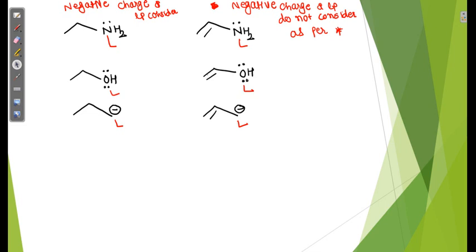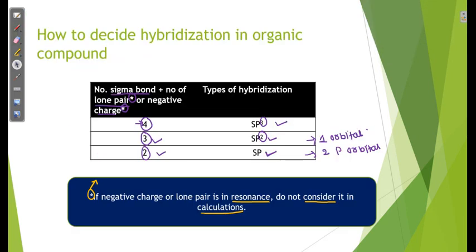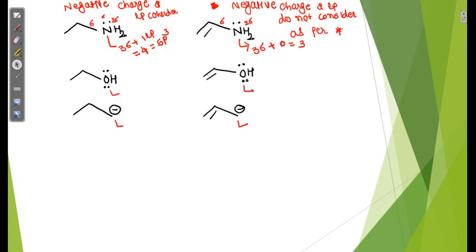For an NH2 group not in resonance: two sigma bonds from hydrogen plus one sigma bond plus one lone pair equals 4, so hybridization is sp3. For an NH2 group where the lone pair is in resonance (starred), we do not consider the lone pair: three sigma bonds with zero lone pairs gives a sum of 3, so hybridization is sp2.